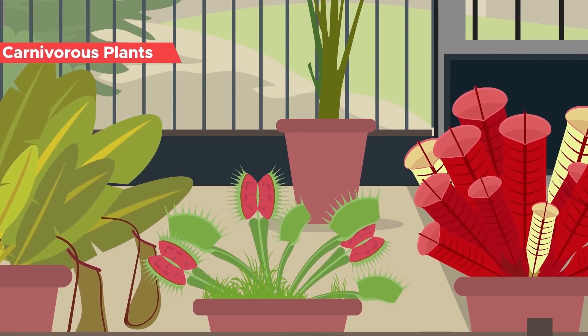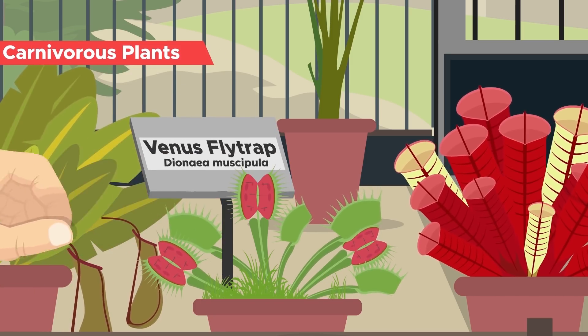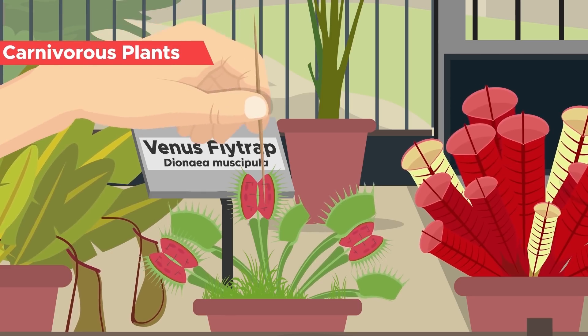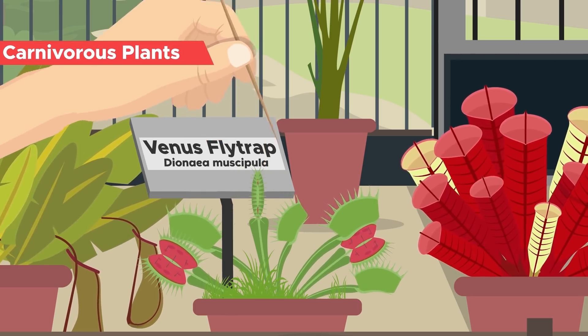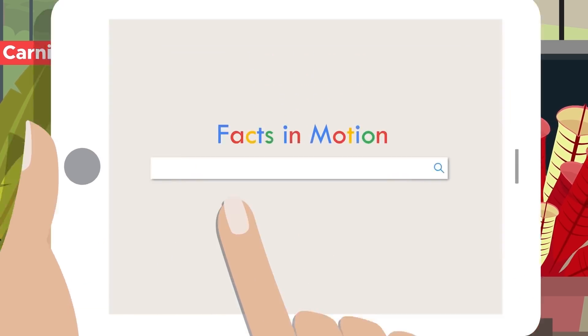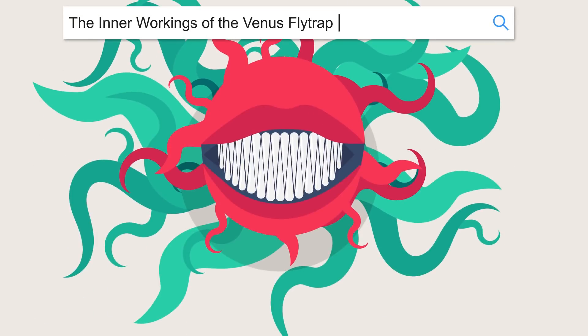The most iconic of these carnivorous plants is probably the Venus flytrap. But why did they evolve like this and how exactly does its unique mechanism of catching prey work? That's what we are going to find out in this episode of Facts in Motion. The inner workings of the Venus flytrap.